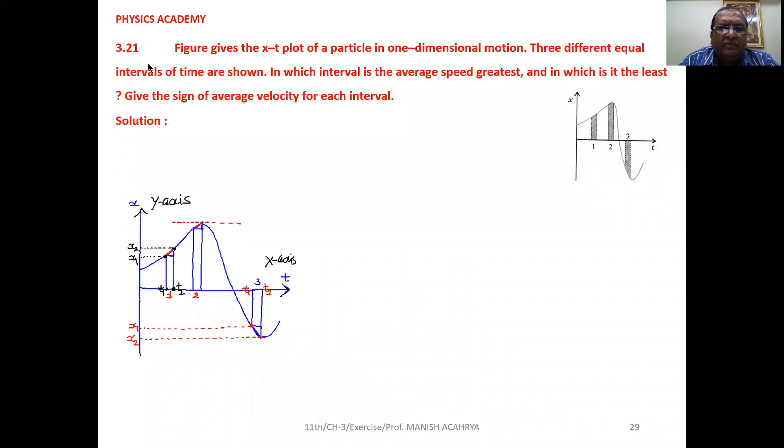Now, Example 3.21. Figure gives the x versus t plot of a particle in one dimensional motion. Three different equal intervals of time are shown. In which interval is the average speed greatest and in which is it the least? Give the sign of average velocity for each interval.